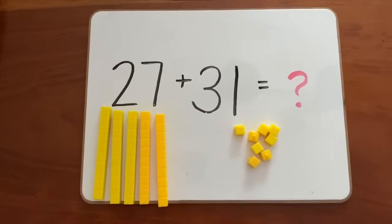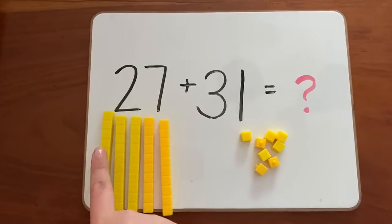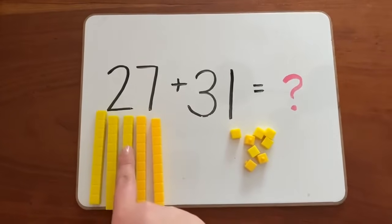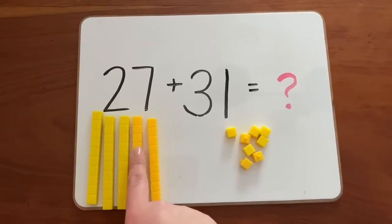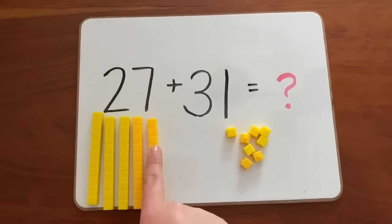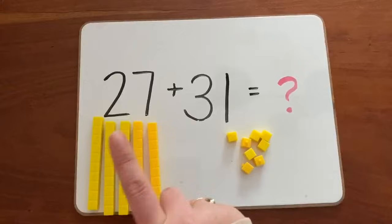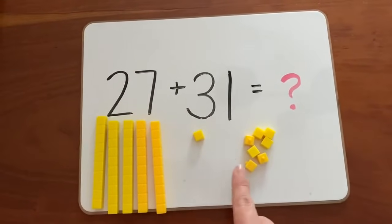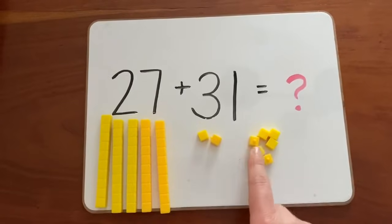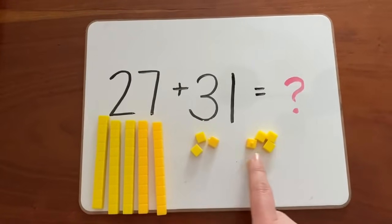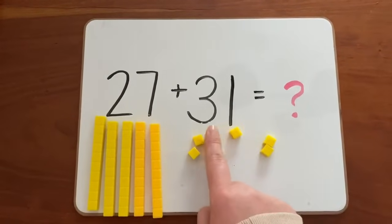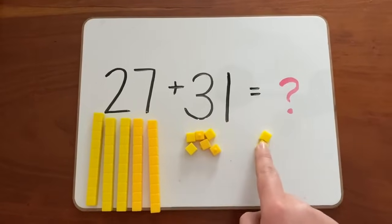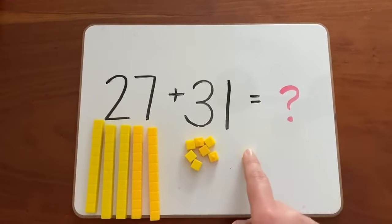10, 20, 30, 40, 50. We don't have any more longs. Now count the cubes: 51, 52, 53, 54, 55, 56, 57, 58.